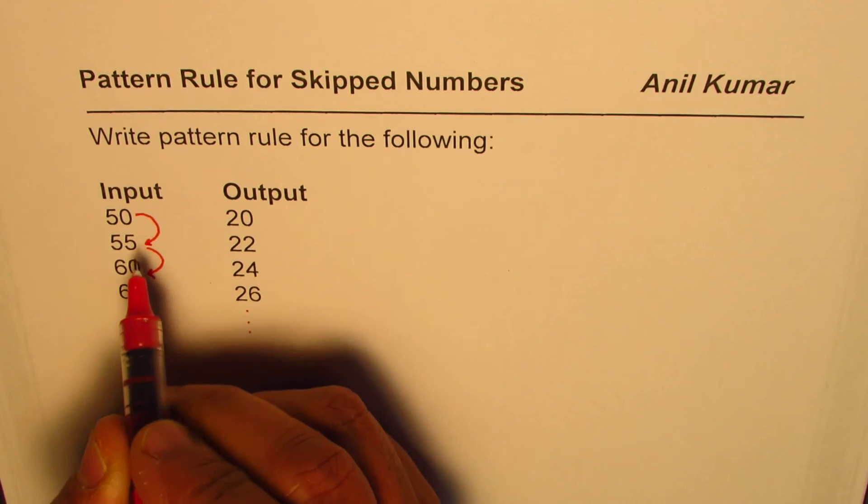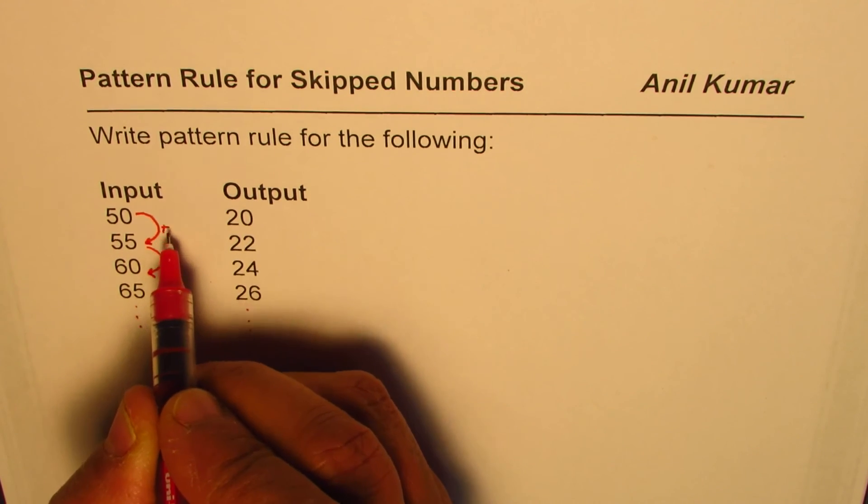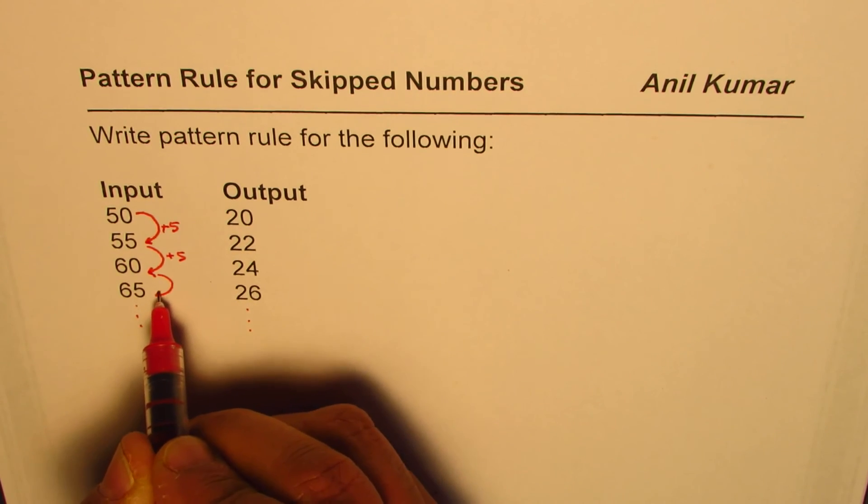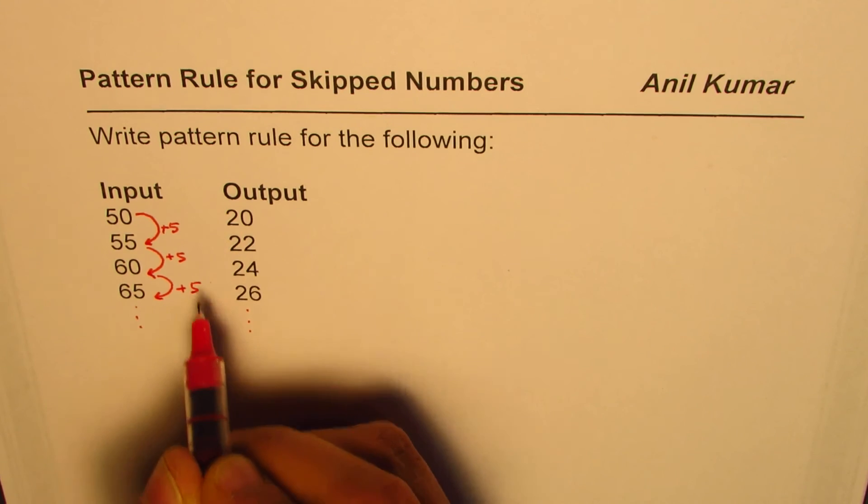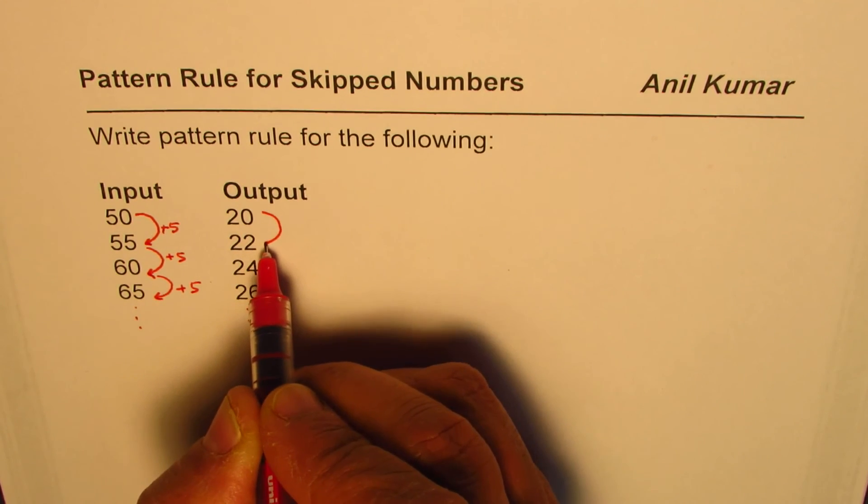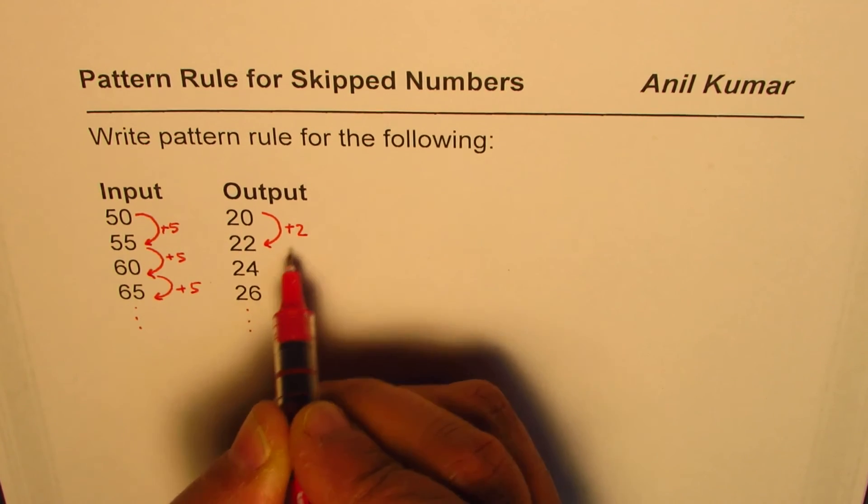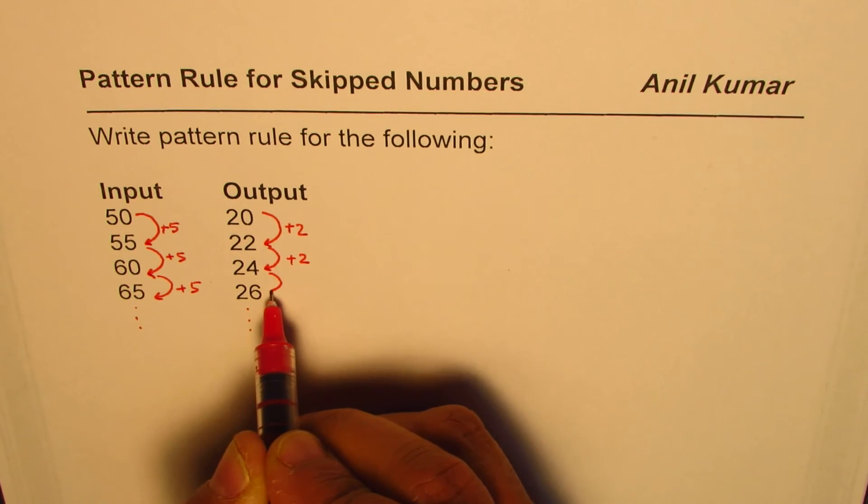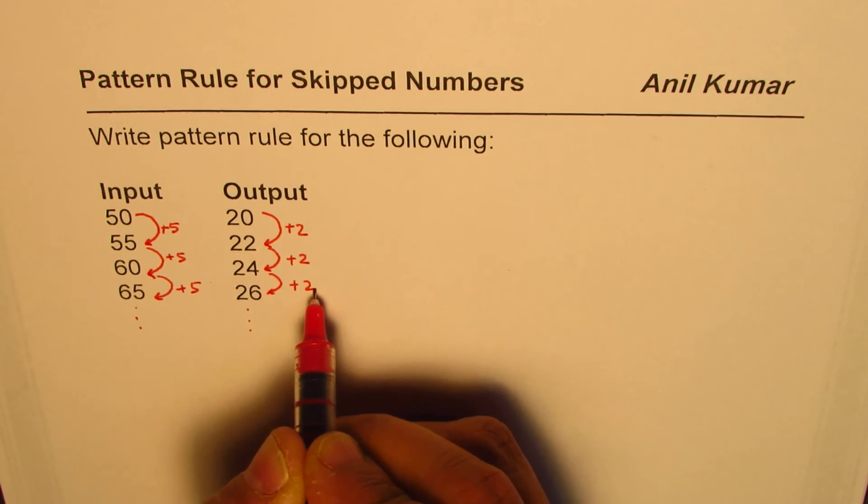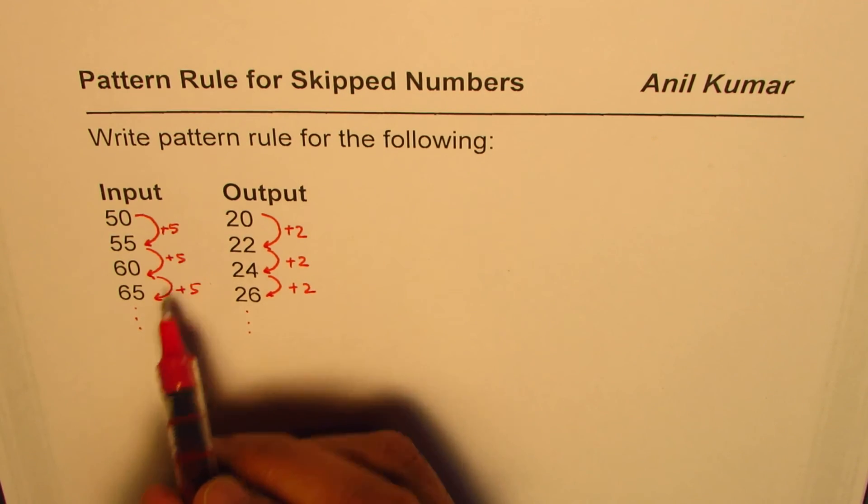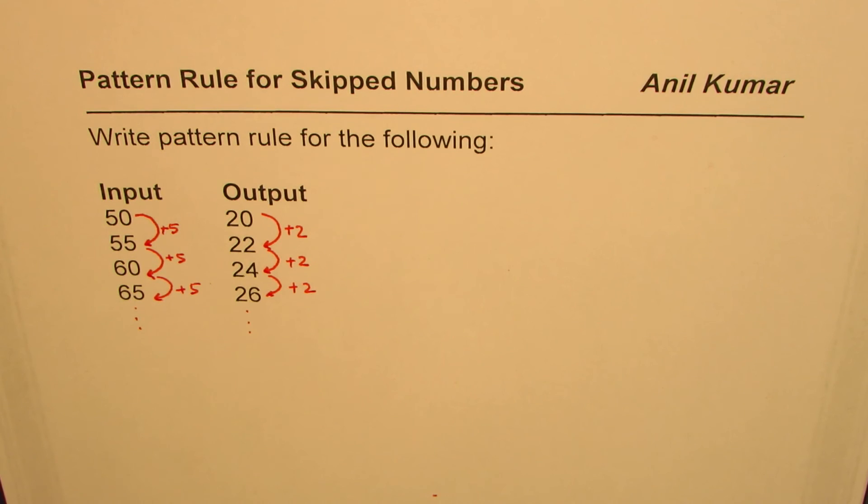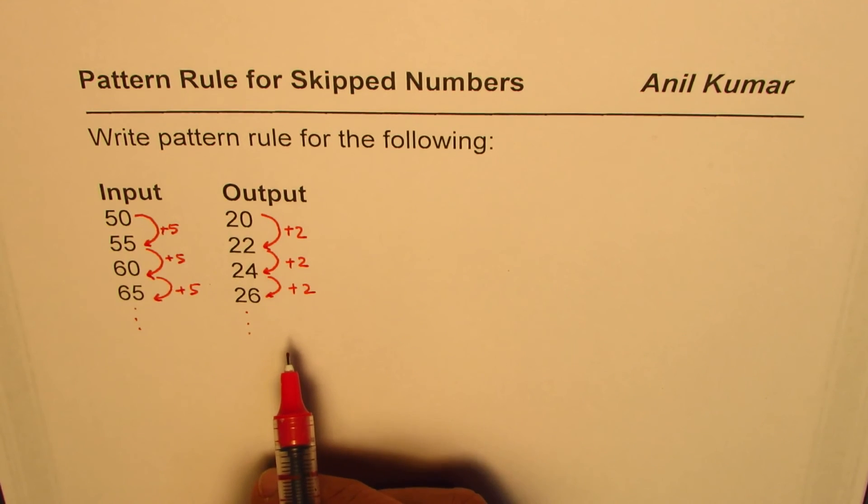So 50, 55, we increased by 5 each time. And the output increases by the same amount, which is plus 2. So they are both increasing by same amounts, maybe different numbers. Input is increasing by 5 and the output is increasing by 2. Now the question is how are they related and how do we find this relation?